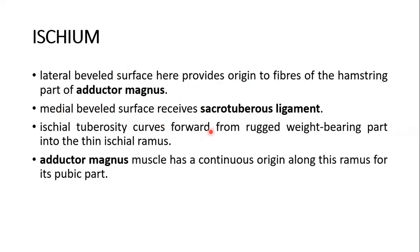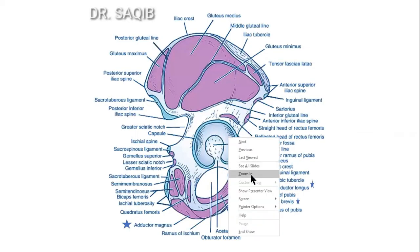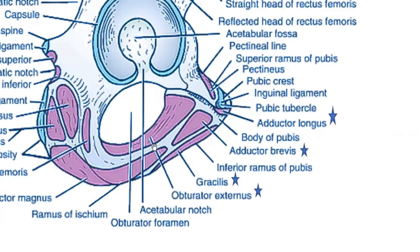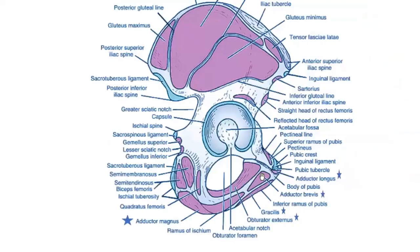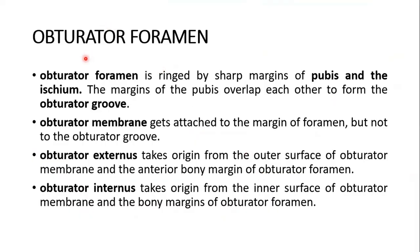The ischial tuberosity curves forward from the rugged weight-bearing part into the thin ischial ramus. Adductor magnus muscle has a continuous origin along the ramus from the pubic part. Now the obturator foramen: it is ringed by a sharp margin of the pubis and the ischium. The margin of the pubis overlaps to form the obturator groove.